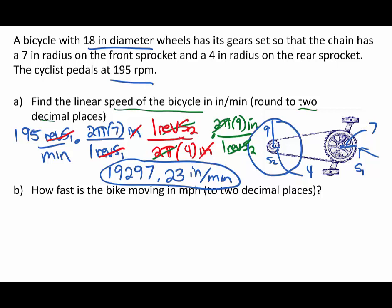Now how fast is the bike moving in miles per hour? We can now just simply take what we found, which was 19,297.23, and that's in inches per minute, and we're going to go to miles per hour. We got 60 minutes per one hour, and that'll get us in inches per hour.